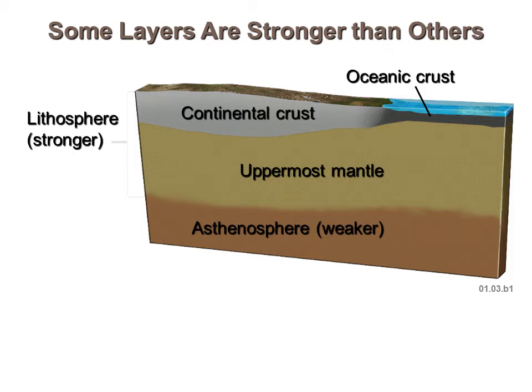Now we can talk in more detail about the crust and what lies just below it. Label the lithosphere and the asthenosphere in your notes. Lithosphere — the root is 'lithos,' meaning rocky. Just below the lithosphere is the asthenosphere, which is weaker and hotter.